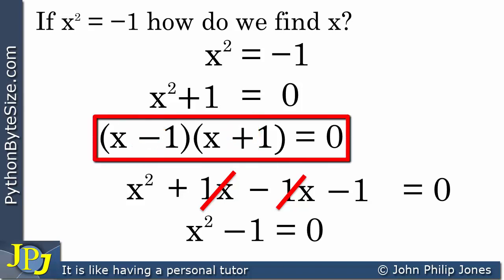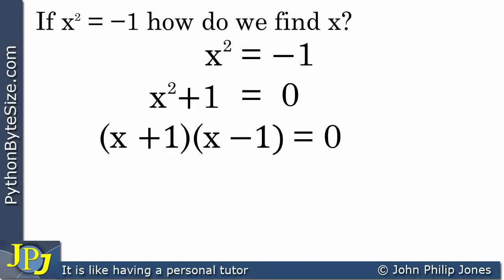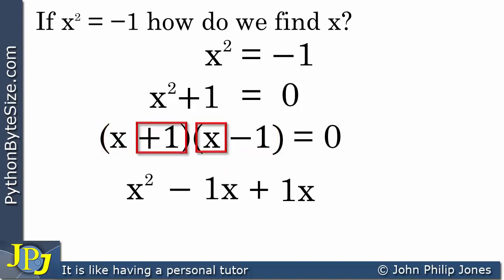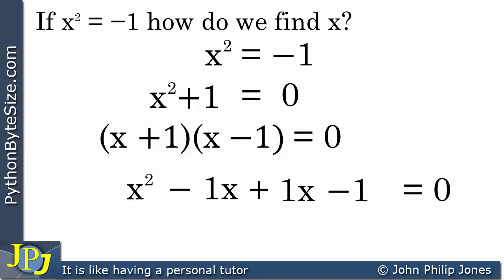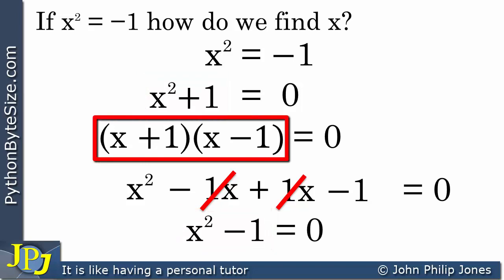The other possibility is plus and minus. Expanding: these two give x squared, then minus 1x, then plus 1x, and multiplying the last terms gives minus 1, all equaling 0. The minus 1x and plus 1x cancel, giving x squared minus 1 equals 0 again. You can see that is not the same as x squared plus 1 equals 0, so this choice of brackets is also not correct.